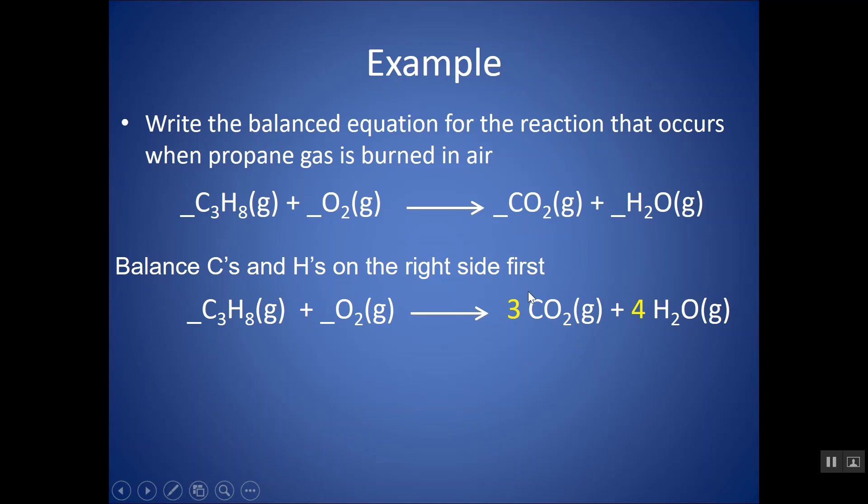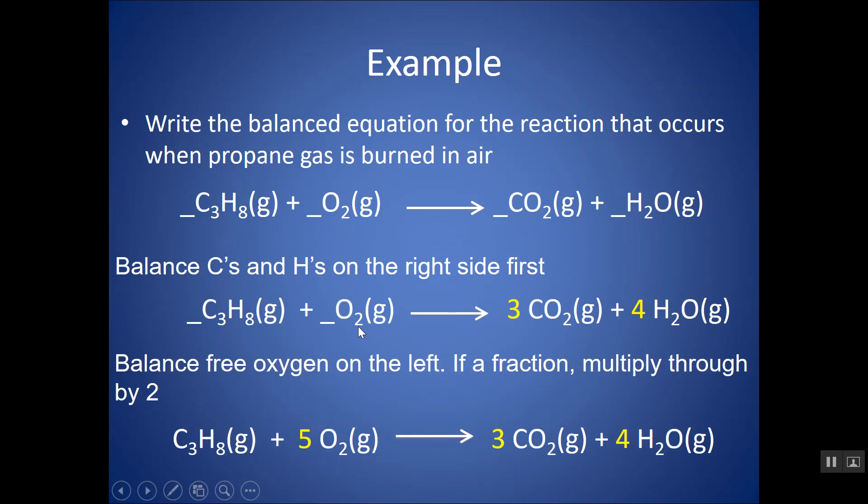Now, I can do the oxygens. So, let's count the total oxygens on the right. There's three CO2s, so that's six. And there's four H2Os plus four, so there's ten oxygens total on the right. So, that means I need ten oxygens total on the left. There's an O2, so whatever number I put in front is going to be multiplied by two. So, that would mean I would put five in front. Five times two is ten. Now, I balanced everything.